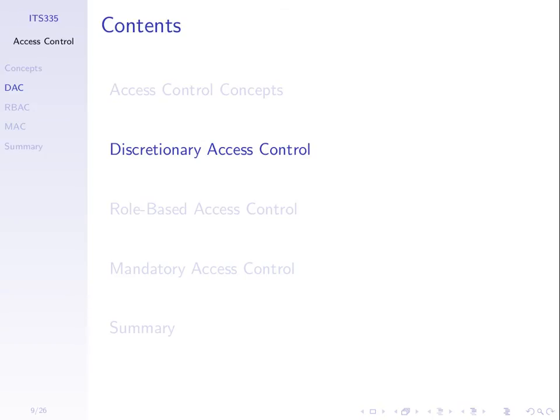We introduced access control in the previous lecture, and we said it's about mechanisms to control what resources users can access. There are three types: discretionary access control, role-based, and mandatory access control. We've only touched upon discretionary access control so far. Today we'll recap on that, introduce the other two quite briefly, and finish with some examples mainly about discretionary access control, which may be helpful for your homework.